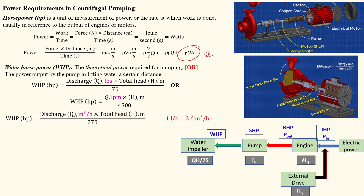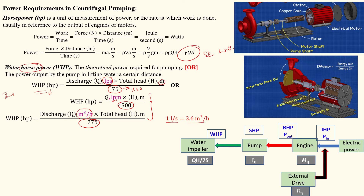Power can also be represented in imperial units as horsepower. The water horsepower formula is: discharge into total head divided by 75, where discharge is in liters per second and head is in meters. The value 75 is the conversion unit. Other forms include: dividing by 4500 for liters per minute, and dividing by 275 for liters per hour. These are all forms of water horsepower.